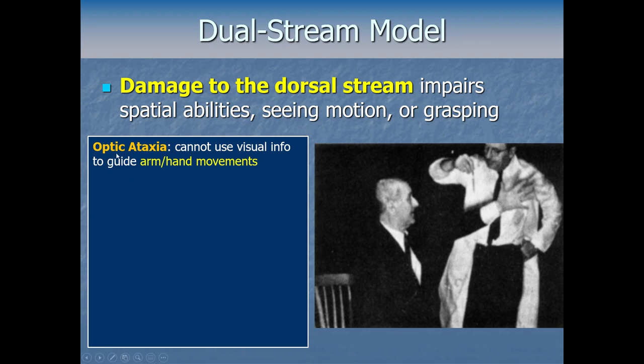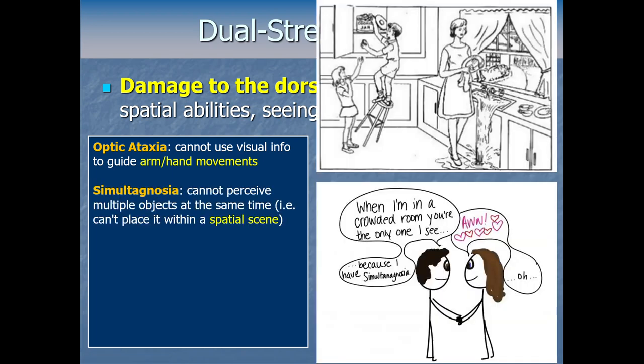If one part of the dorsal stream is damaged, we get a condition called optic ataxia — where the person can't use visual info to guide their arm and hand movements. They can't reach out and grasp things using vision as feedback. But if they close their eyes, they can do things by touch just as well as anyone. With eyes closed they're the same as us, but they can't use visual information to guide their reaching and grasping. If a neuropsychologist holds a pin in front of them and says 'grab this,' they'll usually miss despite looking at it. Another condition from dorsal stream damage is simultagnosia — where you can't actually perceive multiple objects at the same time. You can't place an object within a spatial scene, or objects run together into a jumble, or you can't tell that one object is behind or in front of another.